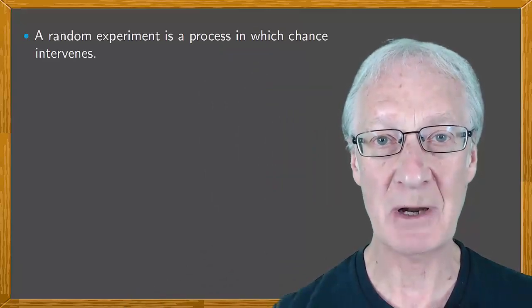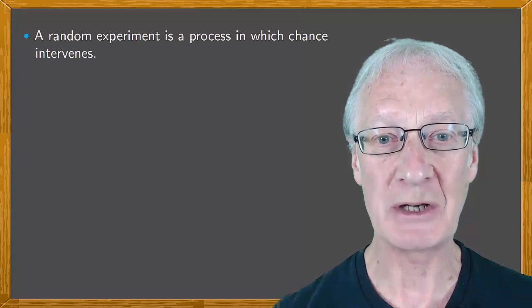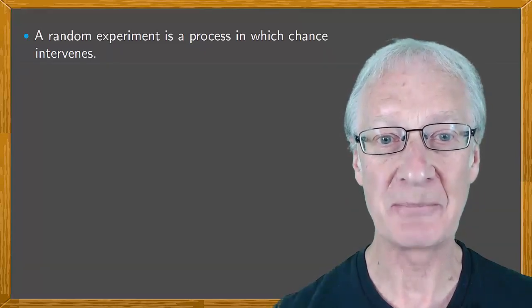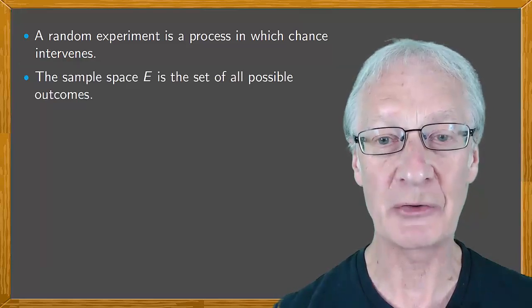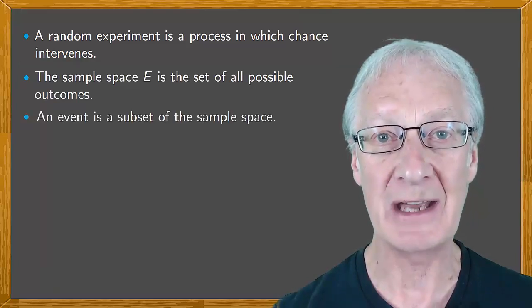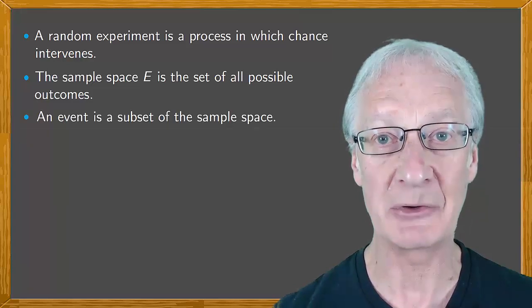A random experiment is one in which chance intervenes. In a random experiment, your sample space E is the set of all possible outcomes, and an event is a subset of the sample space.